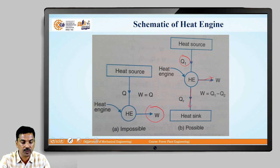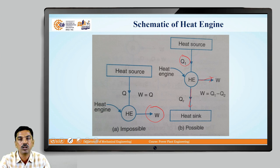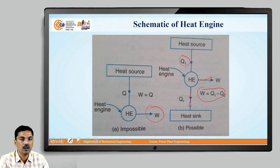So, from the energy balance, you can see that the amount of work developed will be equal to W = Q1 minus Q2. So, by using this Kelvin-Planck statement of the second law, this heat engine is working.